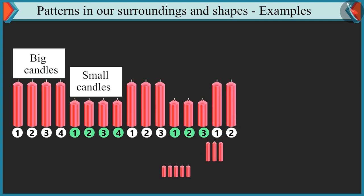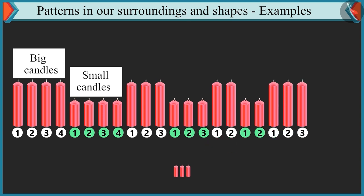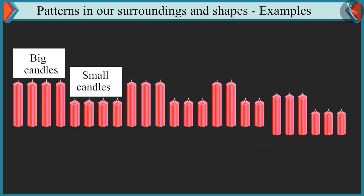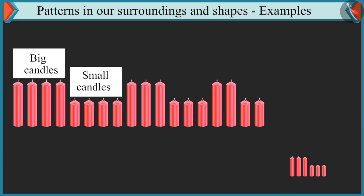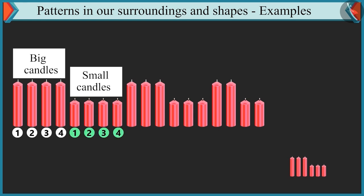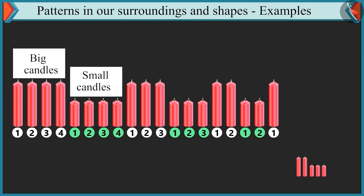Then again we will place two big candles and after that two small candles. You are absolutely right. Now proceed with this pattern and complete it. It is easy. We have to place three big candles and three small candles after two candles. No, Chutki, look carefully. Each time the number of candles is decreased by one. Initially we had four-four candles, after that three-three candles and then two-two candles. So this pattern will be complete if we place one big candle and one small candle beside it.